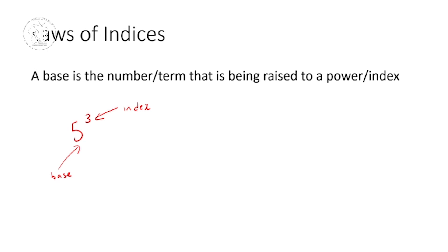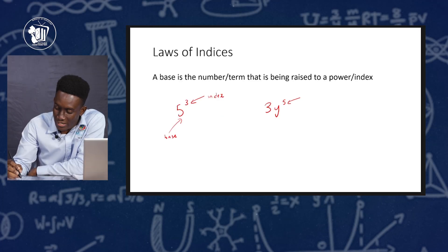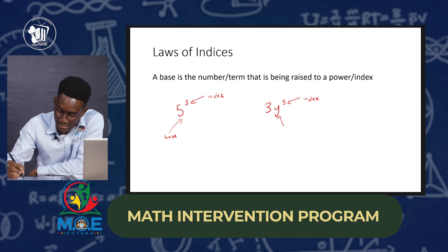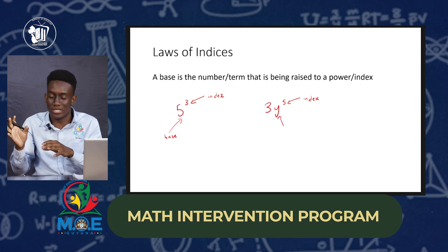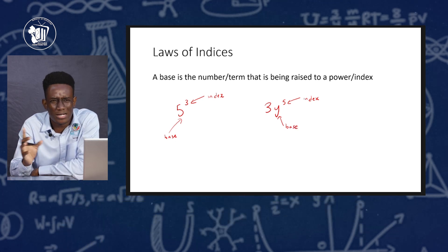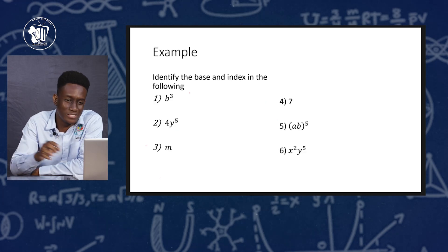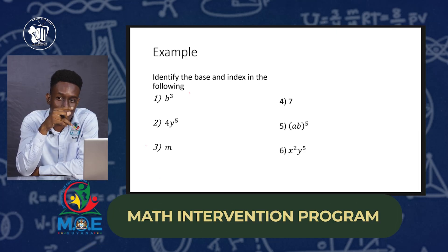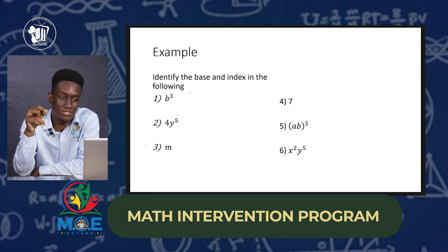Let's say we had another one: 3y raised to the fifth power. This 5 is called the index. And the y, which is being raised to the power, is called the base in this case. The y will be the base because the y is being raised to the fifth power. As long as you can identify the base and index, that will help you to use the laws of indices.